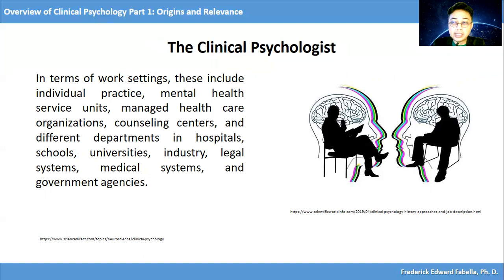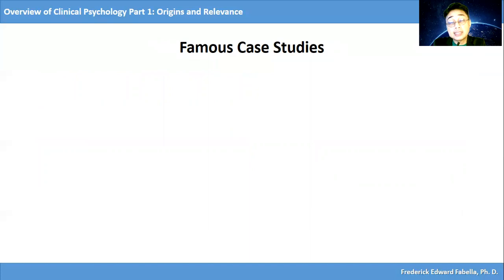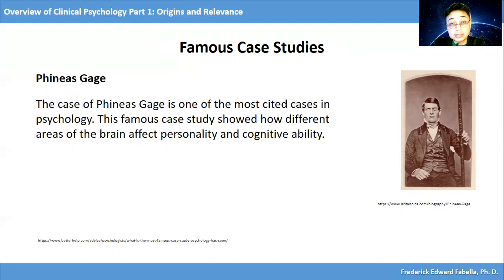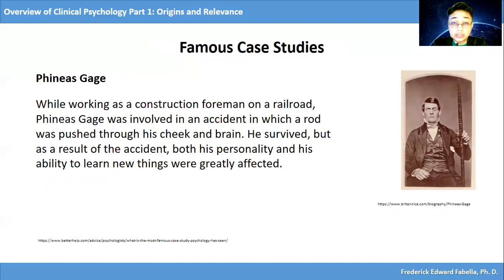Let's consider famous case studies wherein clinical psychologists were very much involved. So who was Phineas Gage? The case of Phineas Gage is one of the most cited cases in psychology. This famous case study showed how different areas of the brain affect personality and cognitive ability. While working as a construction foreman on a railroad, Phineas Gage was involved in an accident in which a rod was pushed through his cheek and brain. He survived, but as a result of the accident, both his personality and his ability to learn new things were greatly affected.